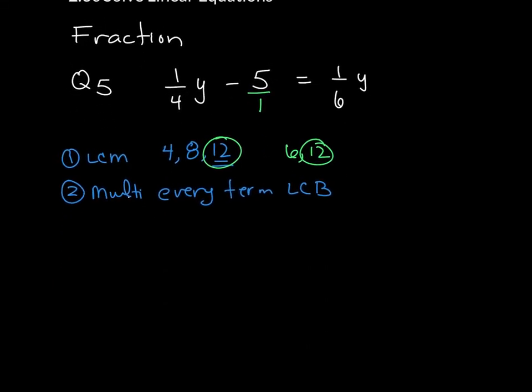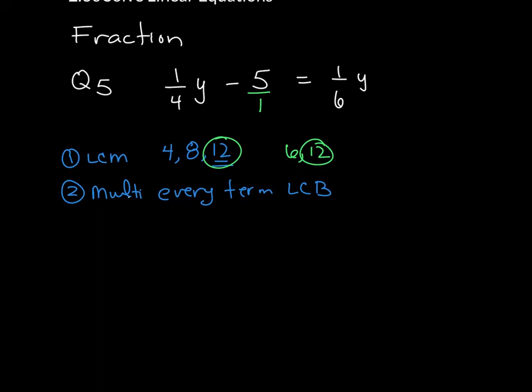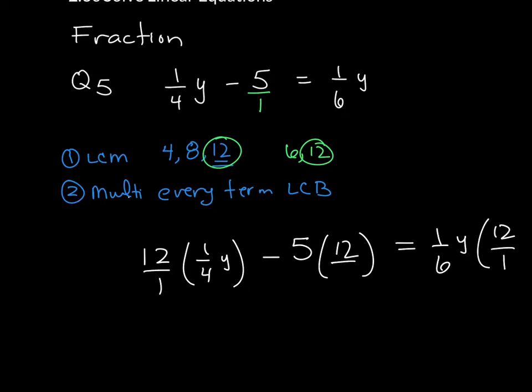So this is what we do with that 12. I take my original piece and then I take 12. And you can write that as either 12 or 12 over 1 and multiply it times every single term. So that's going to be 12 times 1/4 y minus 5 times 12 is equal to 1/6 y times 12. And again, you can put that 12 over 1 at any time you want to. That's step 1. And again, shorthand note, you could just go ahead and take that 12 and multiply it like this. Same idea.